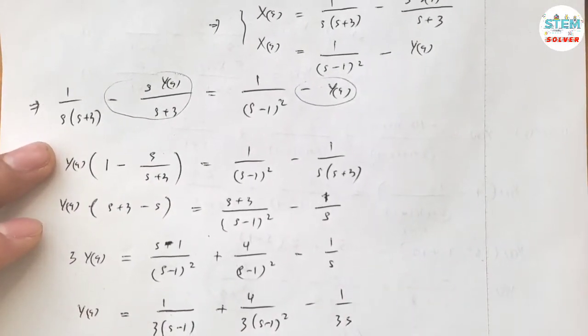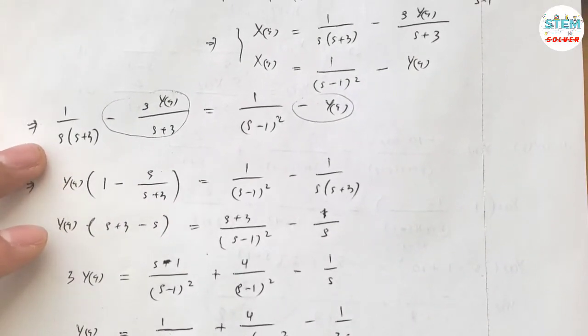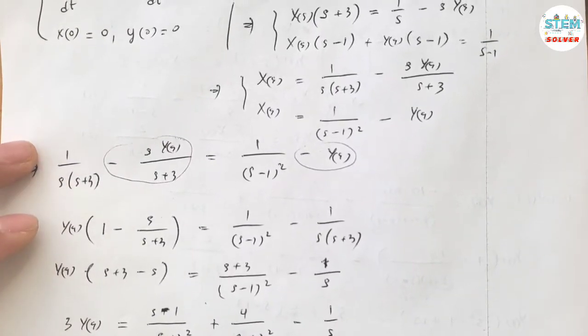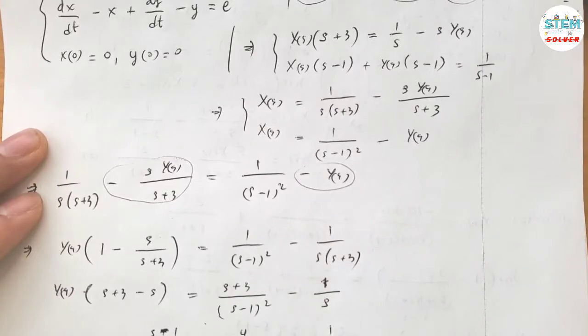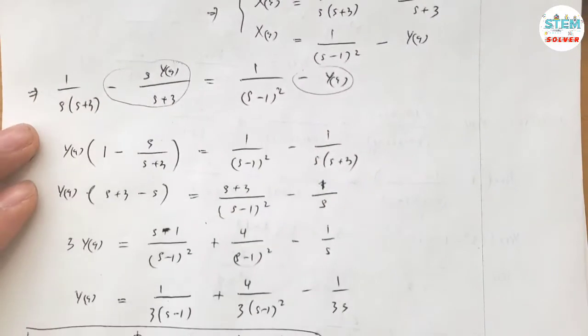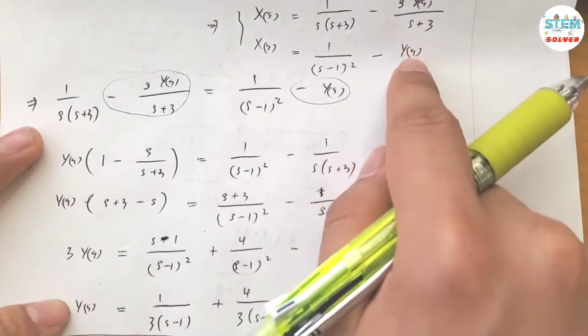And you're not done yet. You're solving the system of linear equations, so you need to have two equations. Since I already found Y(S), now I need to solve for X(S). So Y(S) is this. Plug this back in here.